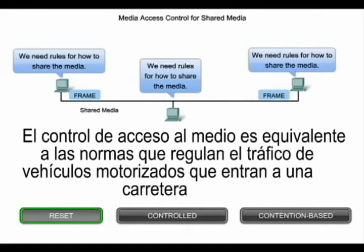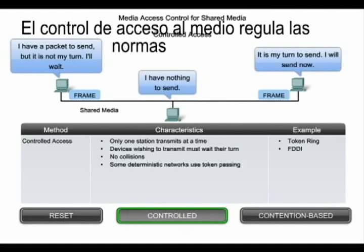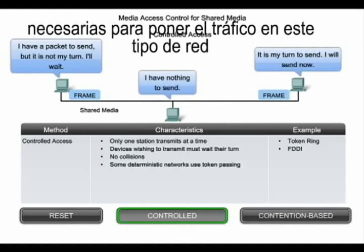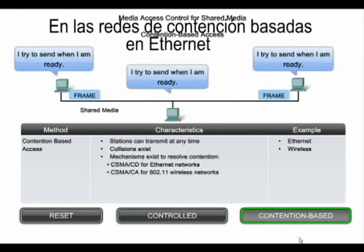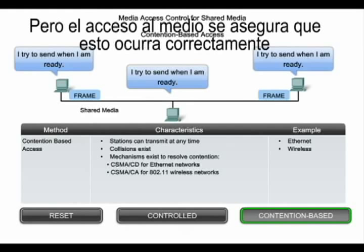Media access control is the equivalent of traffic rules that regulate the entrance of motor vehicles onto a roadway. In controlled access networks, such as some wireless LANs, only one device can transmit at a time, and the media access control layer follows the rules necessary to put traffic onto this type of network. In contention-based networks, such as Ethernet, the rules for putting data onto the network are different, but the media access control sub-layer assures this happens correctly.